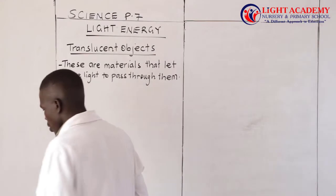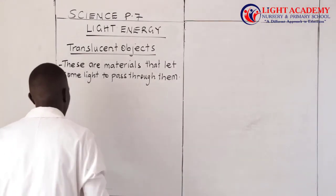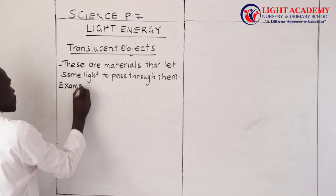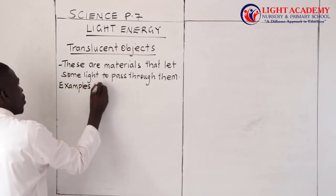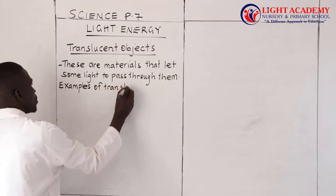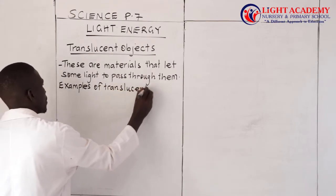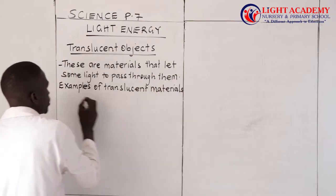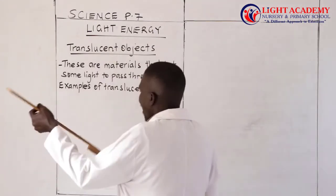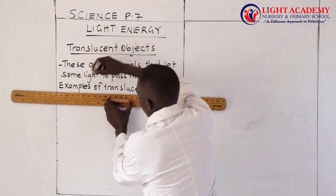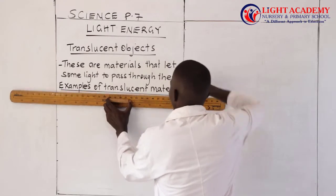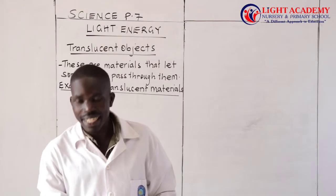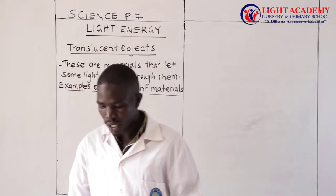Examples of translucent materials — these are materials that allow some light to pass through them. What are the examples of translucent materials?